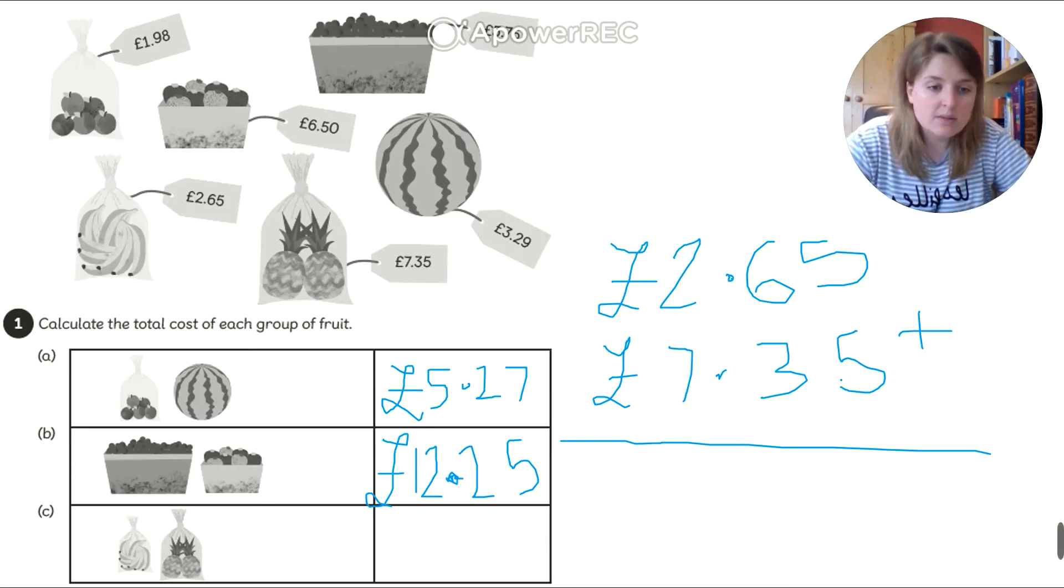So let's have a look at this one. I've lost my mouse. There it is. 5 and 5 is 10. My 0 goes here. Carry the 1 over. 1 add 6 is 7. Add the 3 is 10. So again 0. Carry the 1 over.